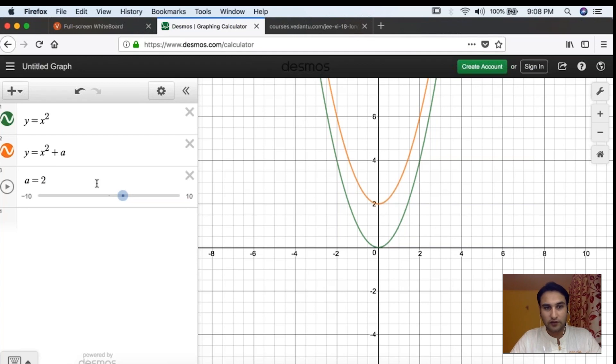That is what we call vertical transformation. If I now subtract something, if I want to subtract something, let me take a negative value of a. See, the graph will go down: x² - 2, see it has gone below by 2 units. Further below: x² - 4, x² - 2, x² exactly there itself, x² + 2, and x² + 4.